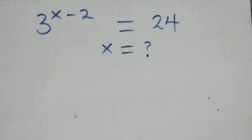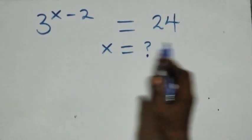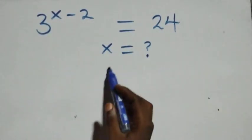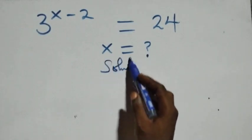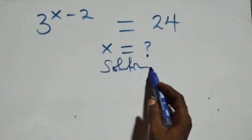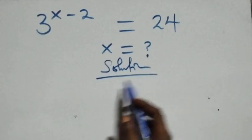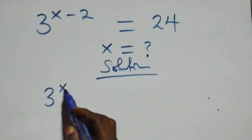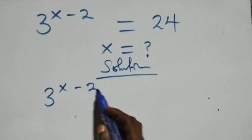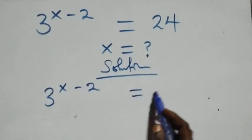Welcome. How to solve this nice exponential equation. What we have here is three raised to power x minus two, equals to twenty-four.